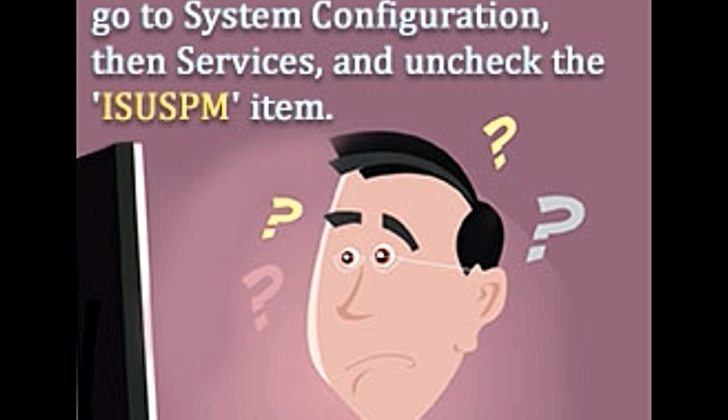Disable ICISM.iz. If you wish to stop receiving updates, you can disable ICISM using the following steps. Click on start and then run. Type msconfig and then press ok. Select the startup tab and uncheck the item marked ICISM.iz and click ok.